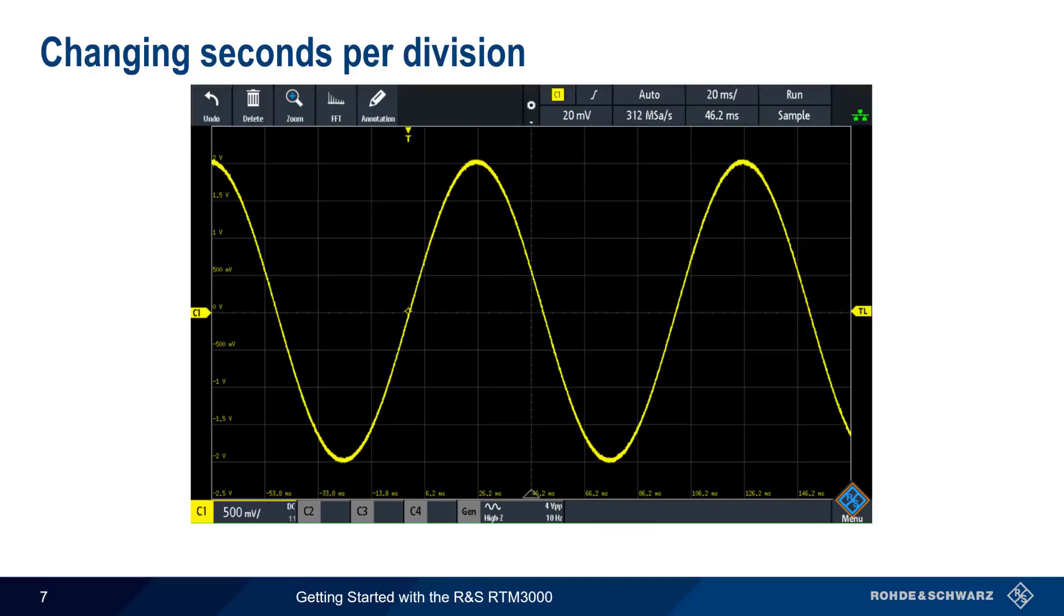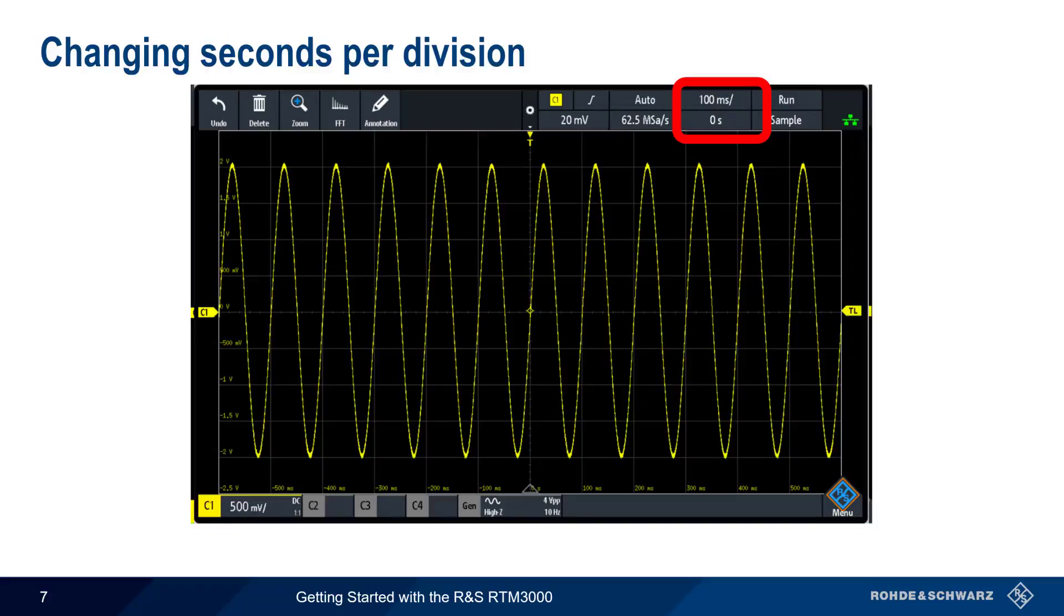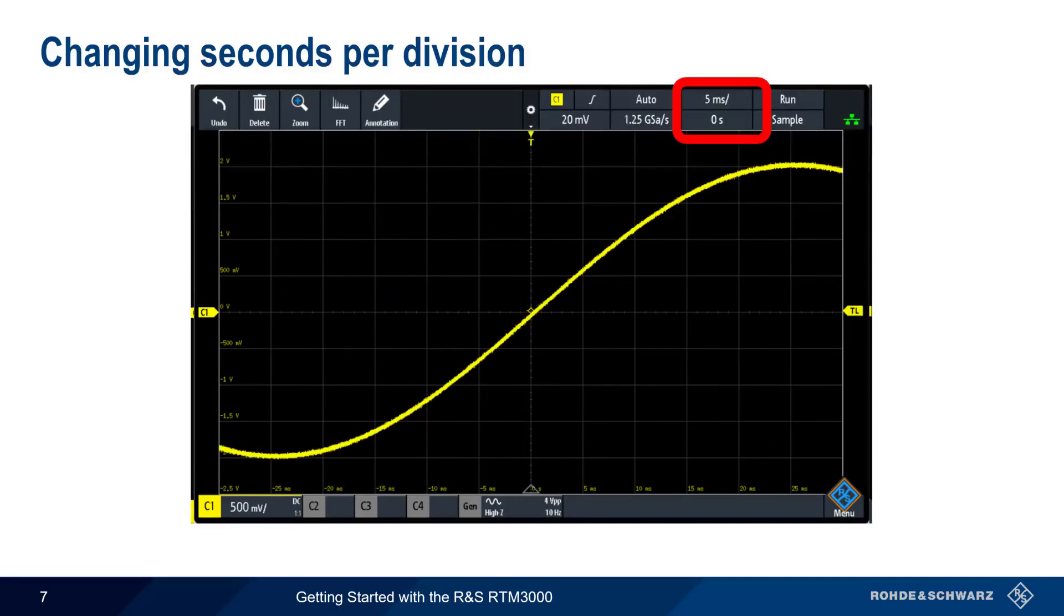Unlike the vertical system, where the correct setting for Volts Per Division is the one that maximizes the waveform vertically, the choice of Seconds Per Division depends on the application. We can choose larger values of Seconds Per Division to see more cycles of a periodic waveform, and smaller values to see fewer cycles or even just a portion of one cycle.